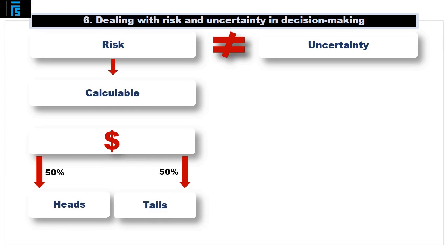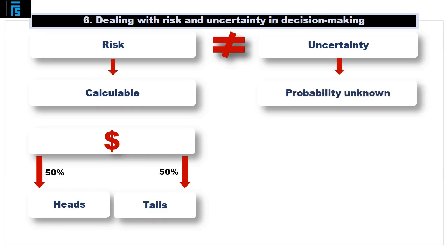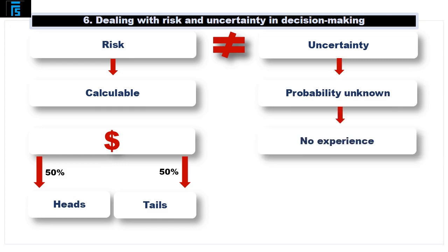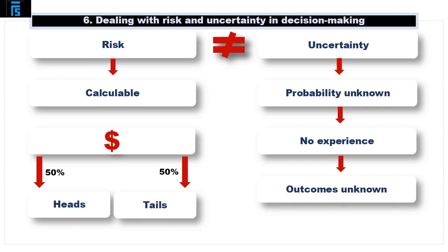However, with uncertainty, we may not know the probabilities of the possible outcomes. We may not have the experience with which to estimate them. We may not even know all the possible outcomes themselves. It is this element of certain aspects being unknown that distinguishes risk from uncertainty.